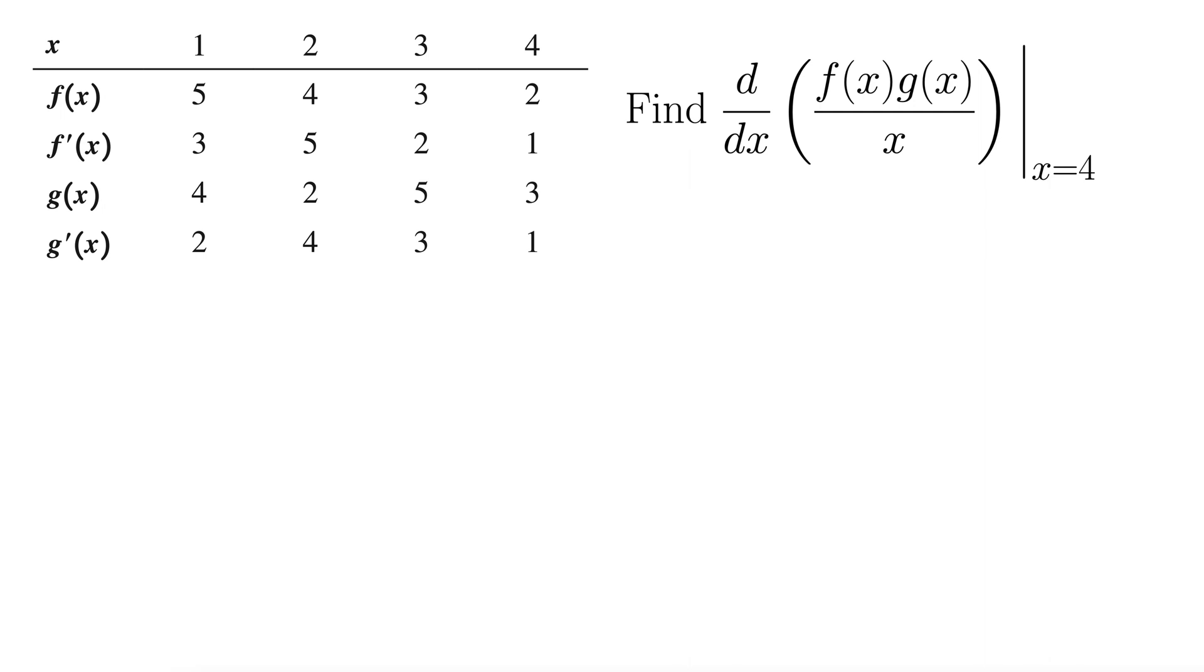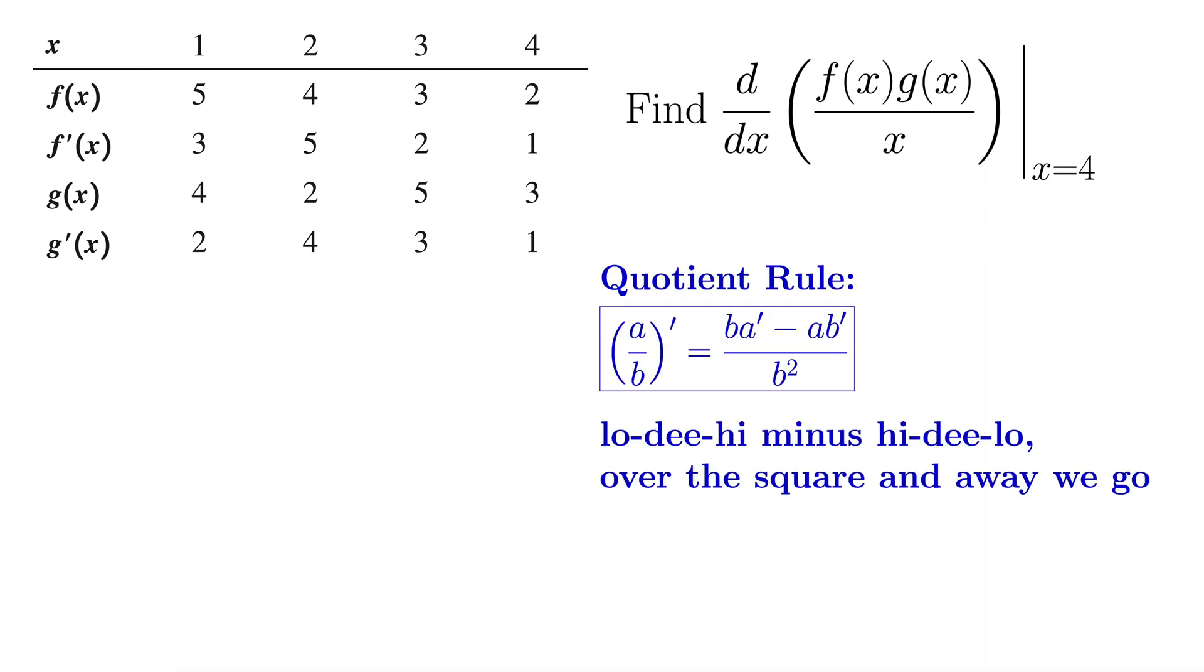So let's do this derivative. We're going to need the quotient rule because we have a quotient here. Low d high minus high d low over the square and away we go.